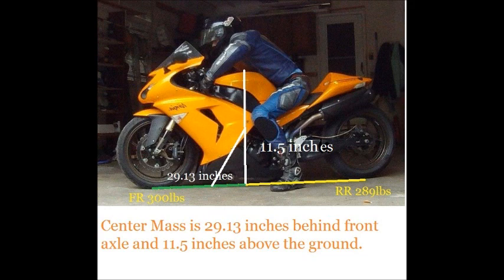So in part 2 we found out that the center mass was 29.13 inches behind the front axle and it was 11.5 inches above the front axle.